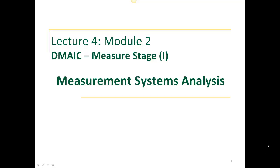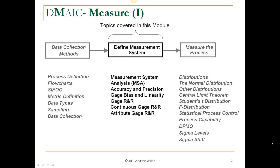Lecture 4, Module 2, Measure Stage, Part 1: Measurement Systems Analysis. In this module, we'll define the measurement system and talk about measurement system analysis, MSA — including accuracy and precision, gauge bias and linearity, the gauge R&R, and the difference between continuous gauge R&R and attribute gauge R&R.